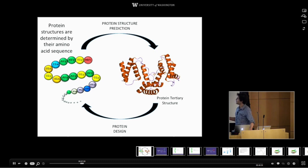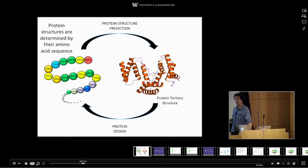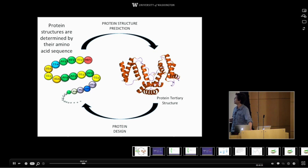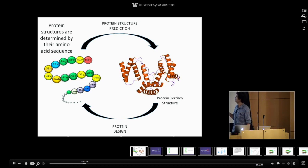How does a particular sequence do anything useful? It's because it folds up to a three-dimensional structure. Each different amino acid sequence folds up to a different three-dimensional structure. It's not obvious, however, how the sequence of amino acids determines that three-dimensional structure. The problem of predicting how the amino acid sequence determines the three-dimensional structure is called the protein structure prediction problem, and that's a problem my group worked on when I first came to the University of Washington.